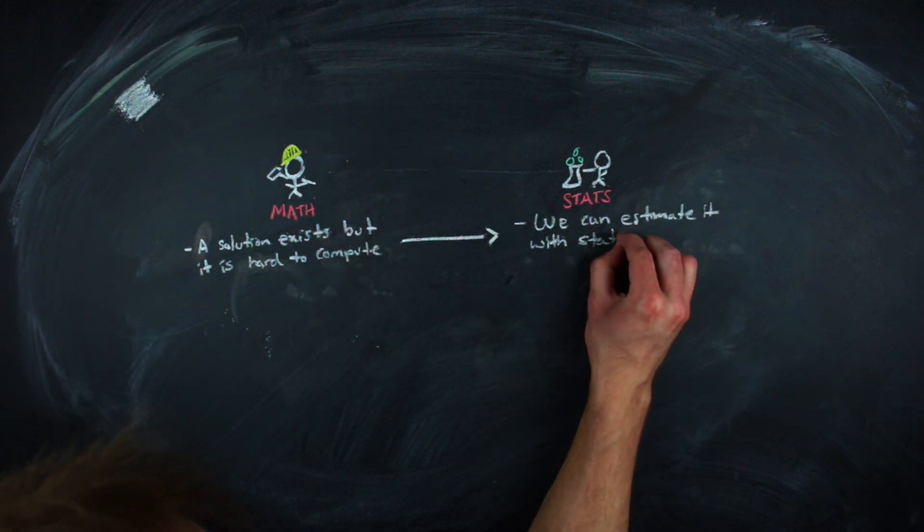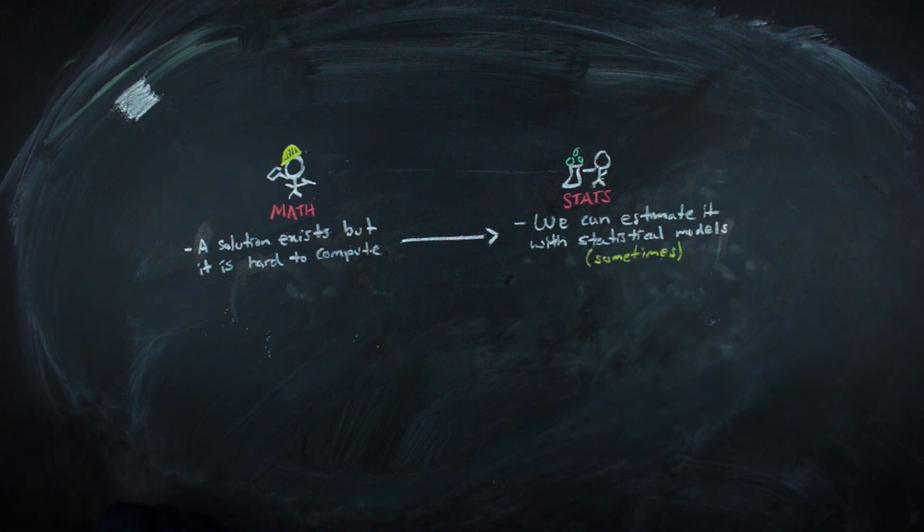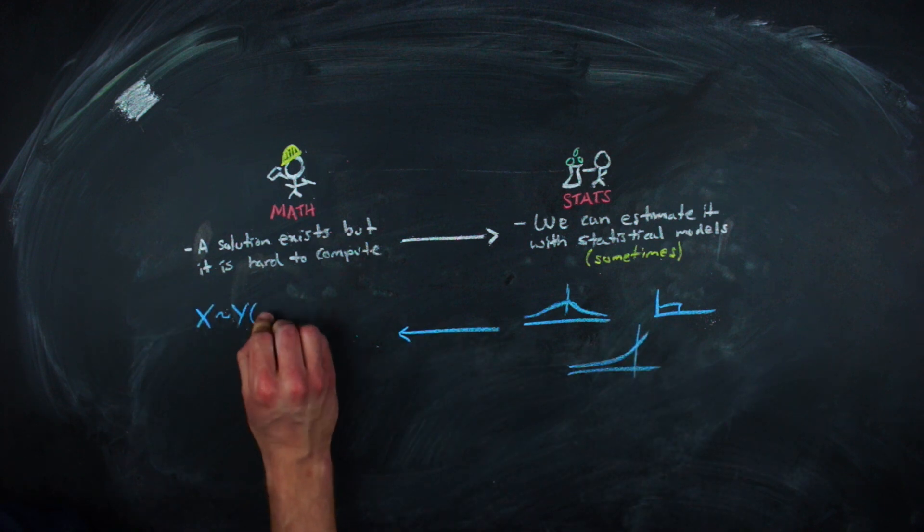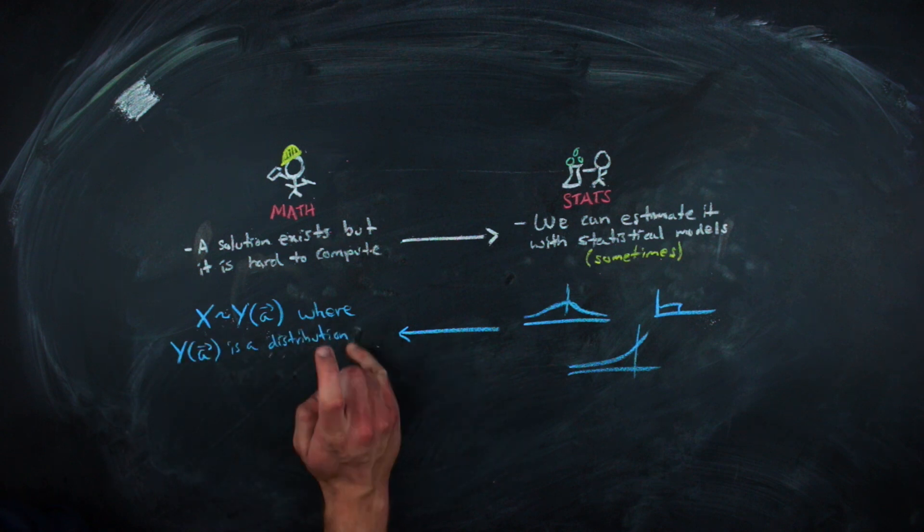And different mathematical problems that have been solved theoretically may not describe a feasible way to calculate a solution for a given example. But tools from statistics can be used to produce algorithms that get very, very close to the solution we know to exist. And sometimes close is good enough.